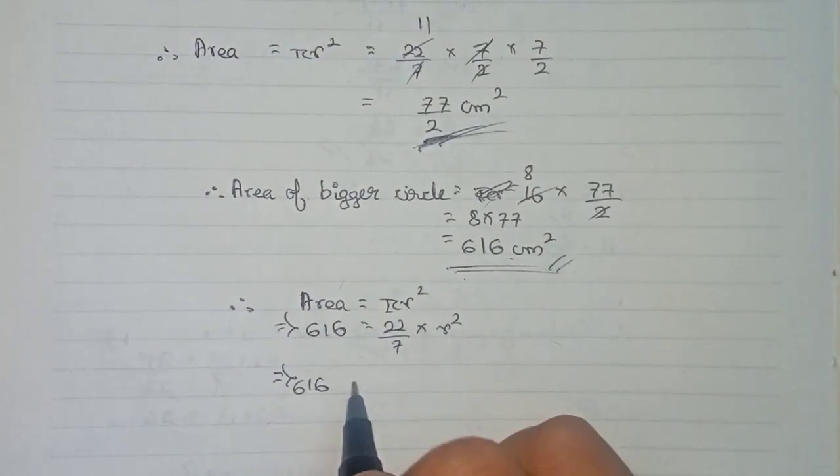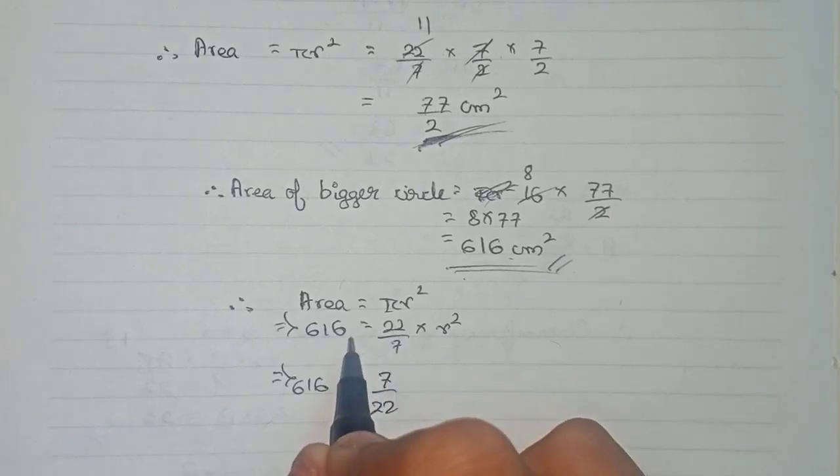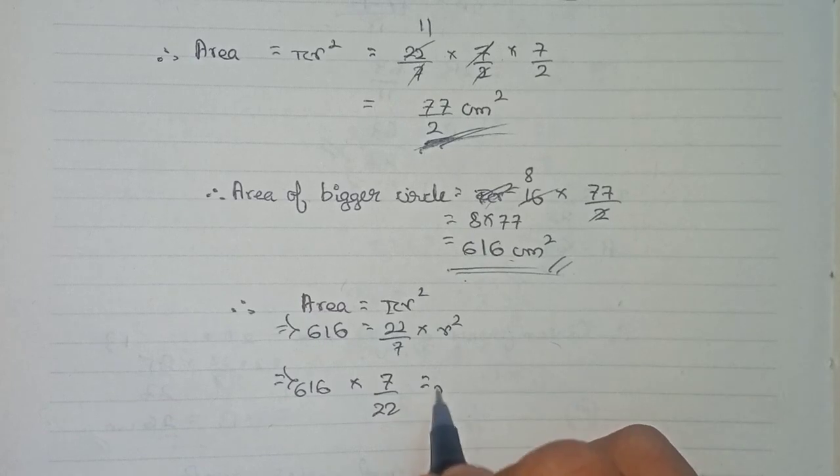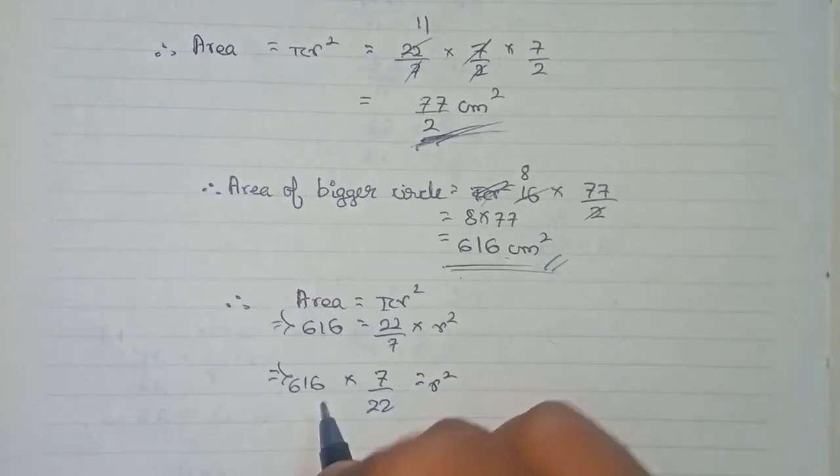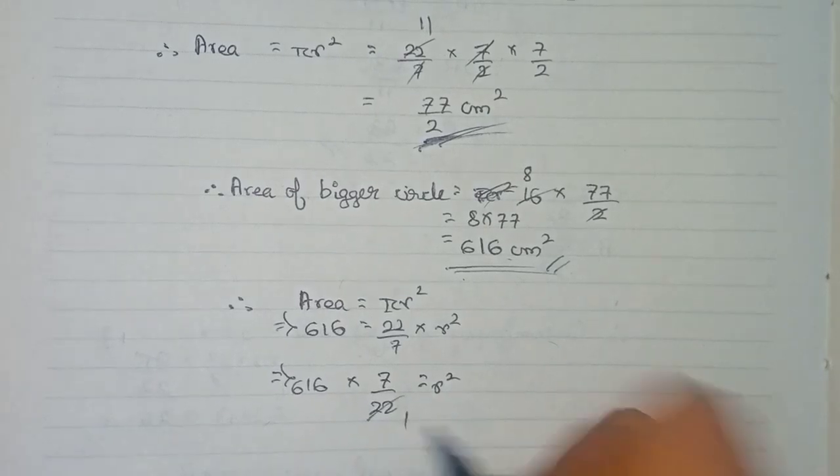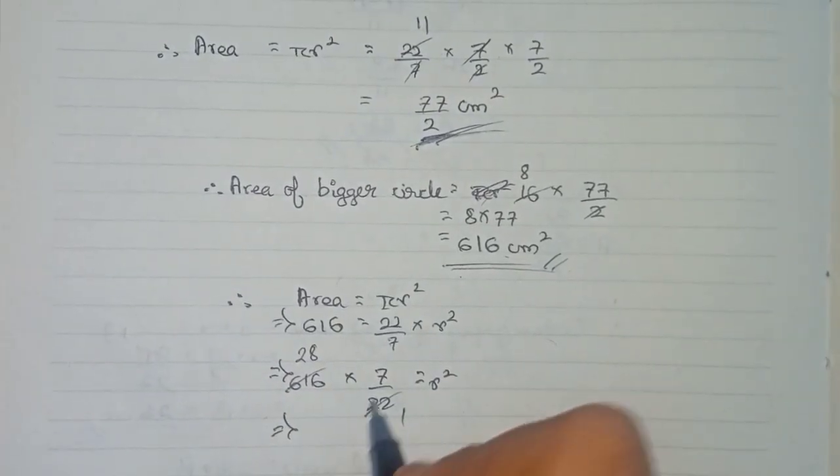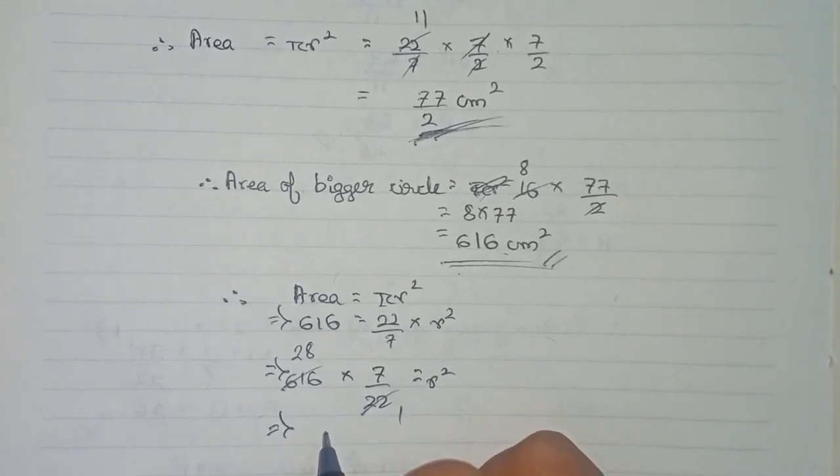So 616 multiplied by 7 by 22. As you are taking 22 by 7 to this side, it becomes reciprocal: 7 will go up and 22 will come down. Here we can cut 616 and 22 directly, it will become 28. So 28 into 7 will become 196 r square.